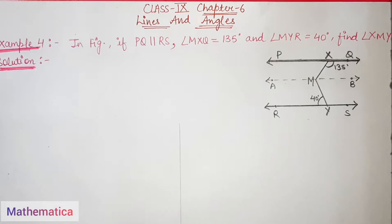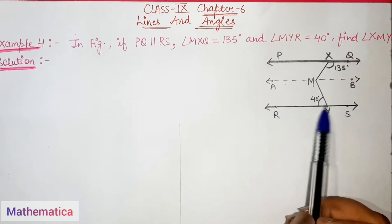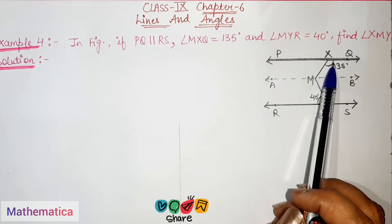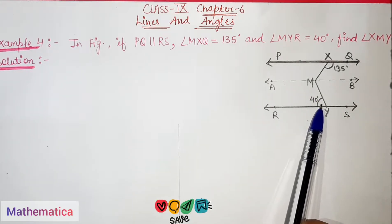Hello everyone, welcome back to my channel Mathematica. Today in this video we will solve Example 4 of Chapter 6, Lines and Angles of Class 9 from the NCERT textbook. The question is: in the figure, if PQ is parallel to RS, angle MXQ is equal to 135 degrees, and angle MYR is equal to 40 degrees, we have to find angle XMY.